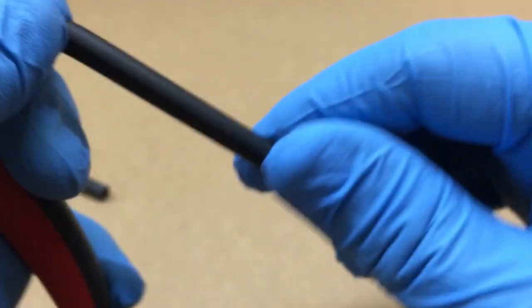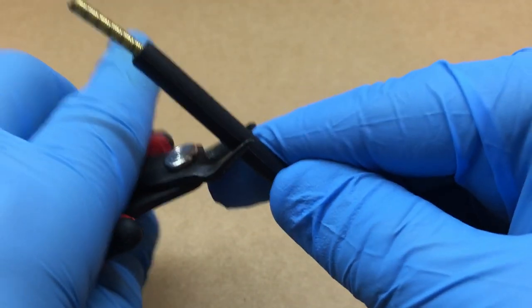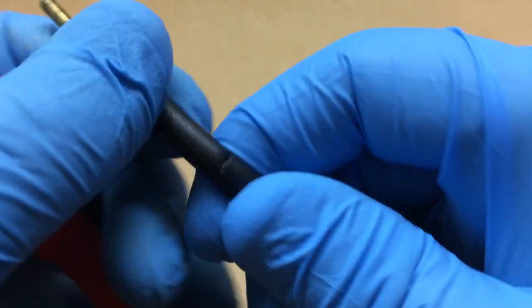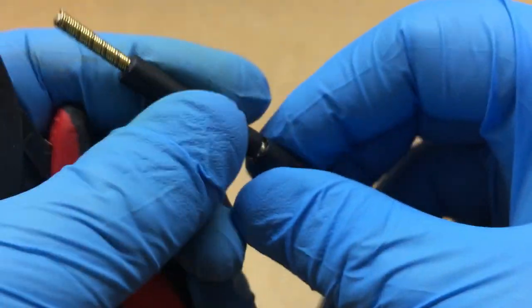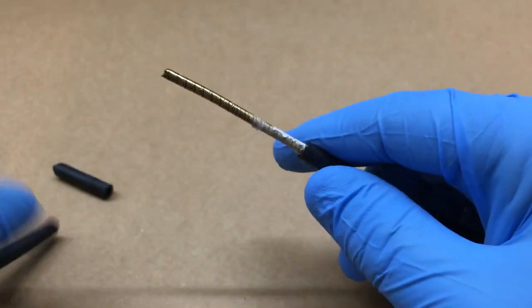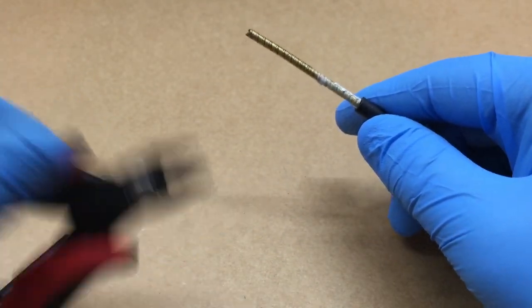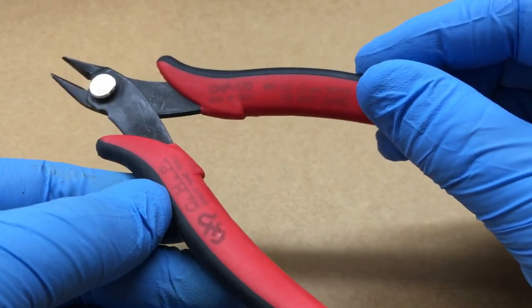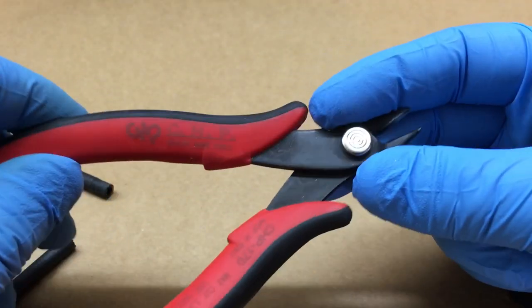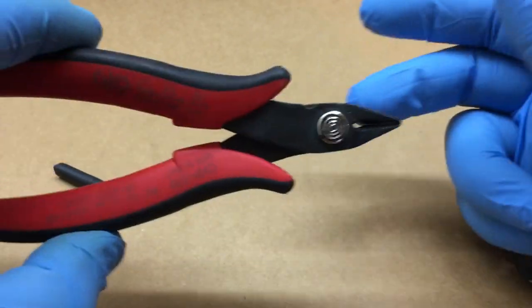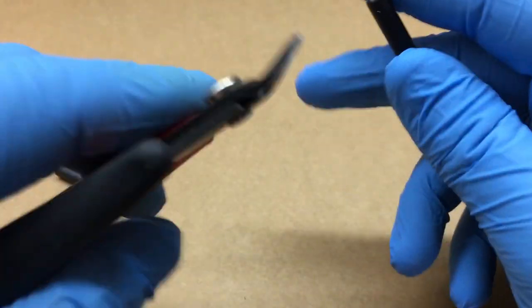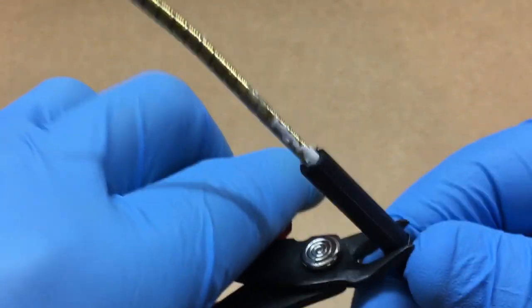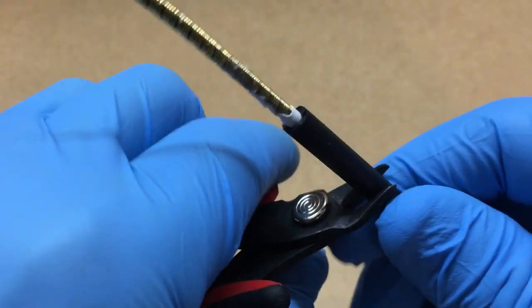Alright, so if we keep cutting here... Tell you what, if you ever need a nice pair of dykes, snips, whatever you want to call them, I always call them dykes. These things are awesome, good for cutting light stuff. Get them on Amazon.